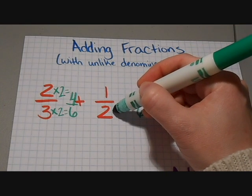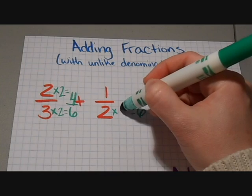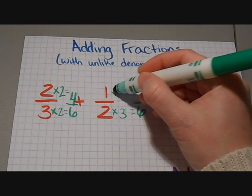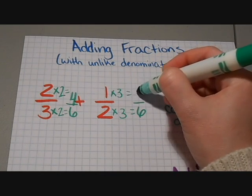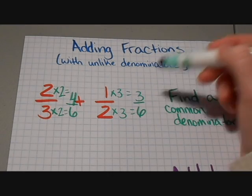Over here, I'm going to do the same thing. 2 times what is going to give me 6? That's 3. So I'm going to do the same thing on the top as well. 1 times 3 is 3. So 1/2 is equivalent to 3/6.